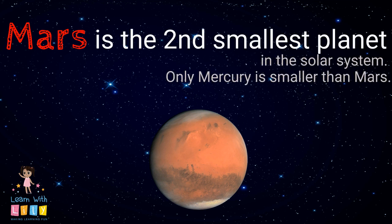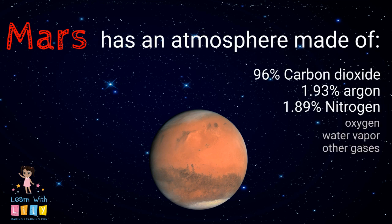Mars is the second smallest planet in our solar system. That's right. Only planet Mercury is smaller than Mars. All the others are larger.